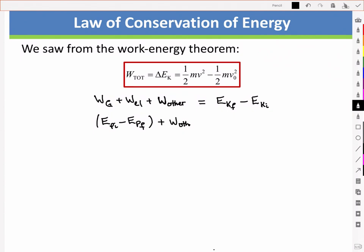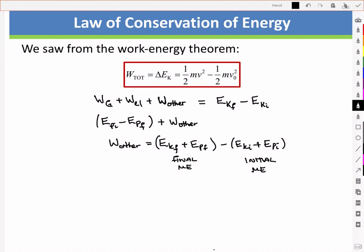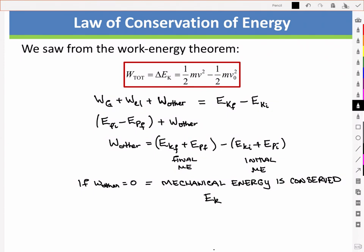Rewriting in terms of W_other, we have that the other work equals our final kinetic energy plus potential energy — our final mechanical energy — minus our initial mechanical energy. So the difference between final and initial mechanical energy is what's being done by that other work; it gives the change in our mechanical energy. If this other work is zero — meaning we have no forces other than gravitational or elastic conservative forces, and no non-conservative forces — then our mechanical energy is conserved, and we're simply going back and forth between kinetic and potential energy with no change in total mechanical energy.